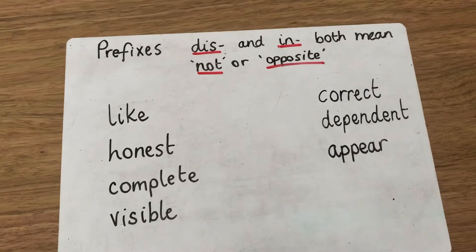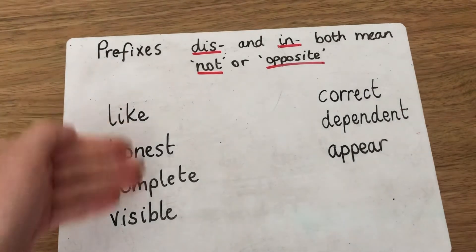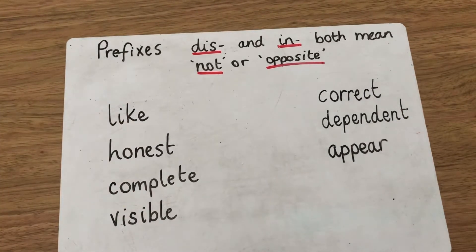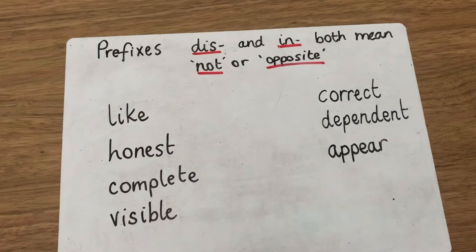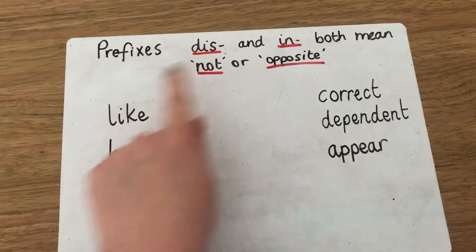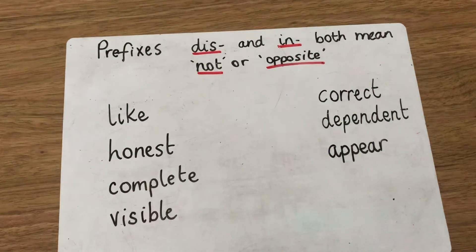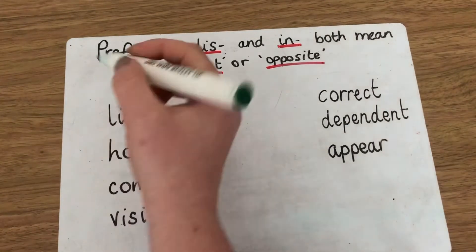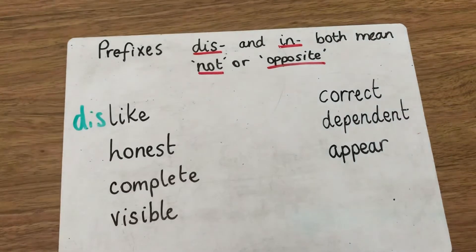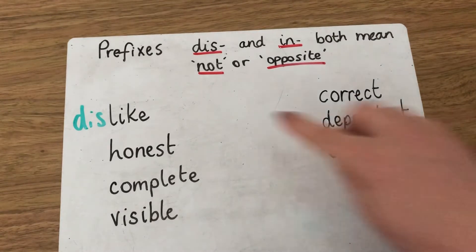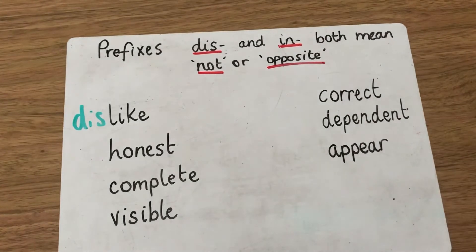So the first one we've got is 'like'. We know 'like' means things that you enjoy — maybe food, places, people. So if we think about 'like' and decide which prefix to add, it's either 'dislike' or 'inlike'. So it's going to be 'dislike'. If you dislike something, you don't enjoy it — it's the opposite. You do not like it.